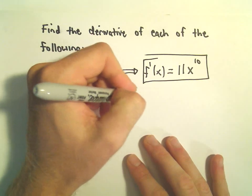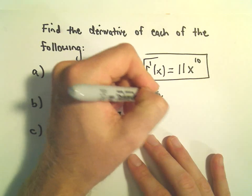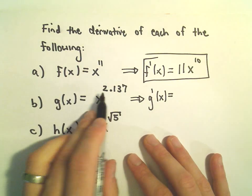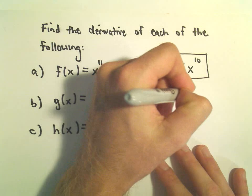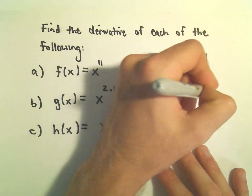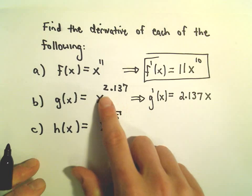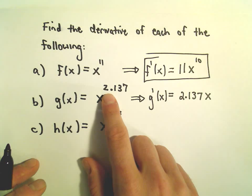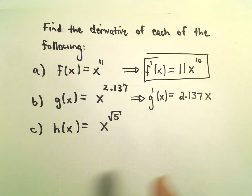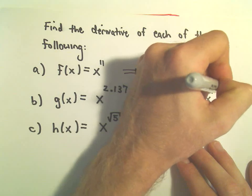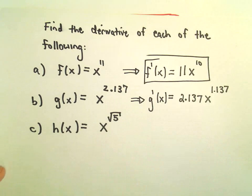Well, same rule still applies. So if we take the derivative, whatever the exponent is, that's what comes out front. So we have 2.137 times x. And then we subtract 1 from the exponent. Well, 2.137 minus 1 would just give us 1.137. And there's our derivative.